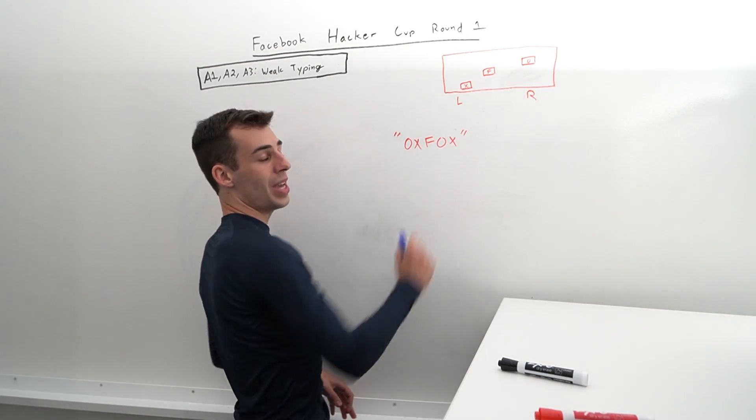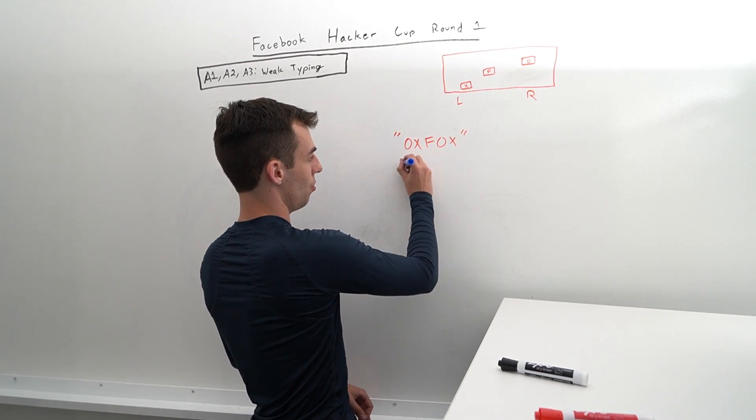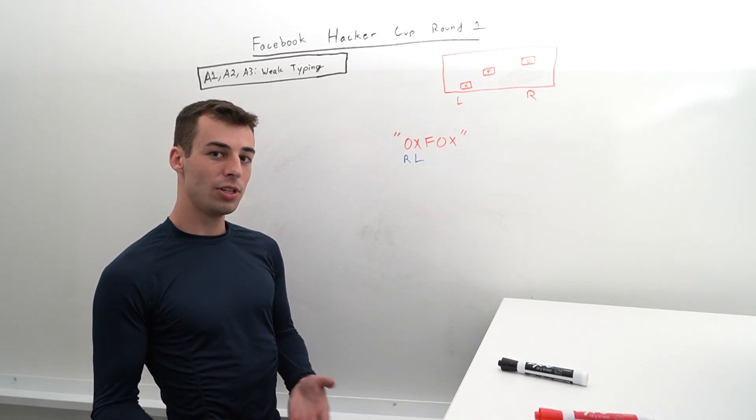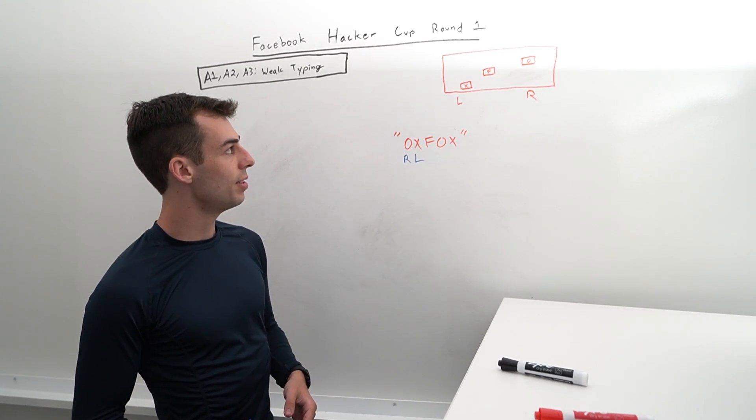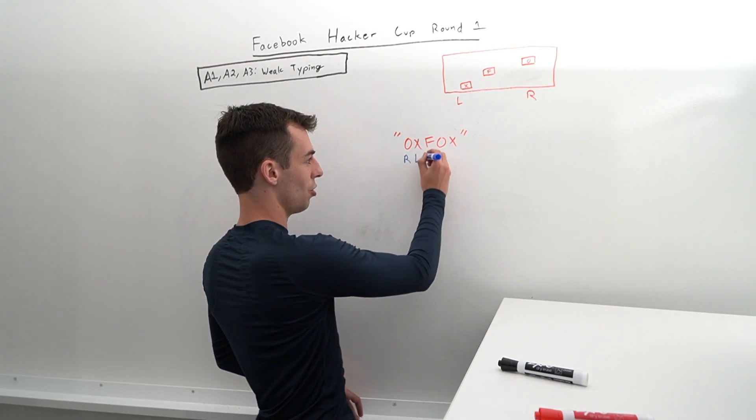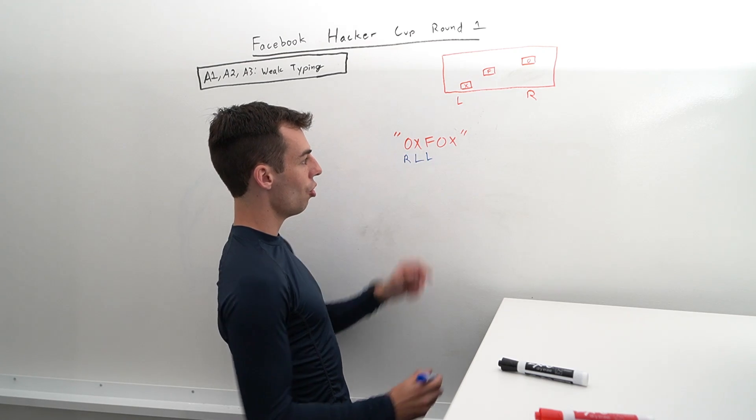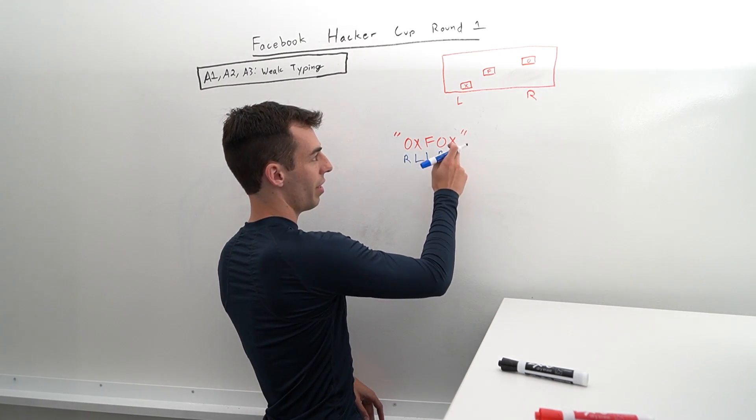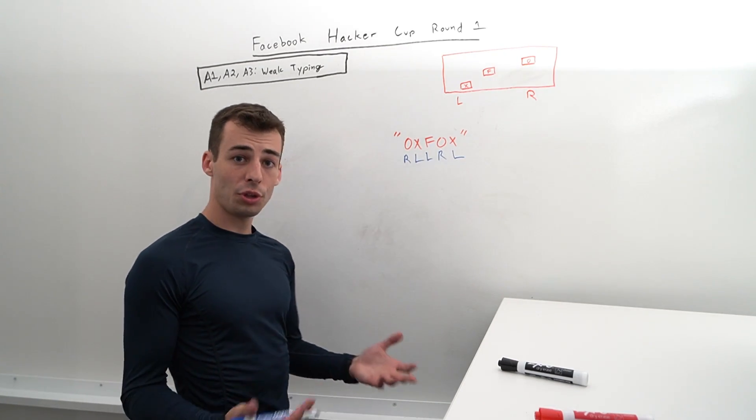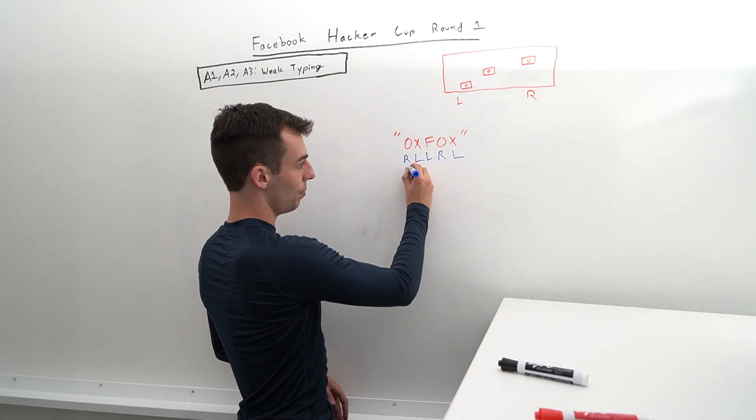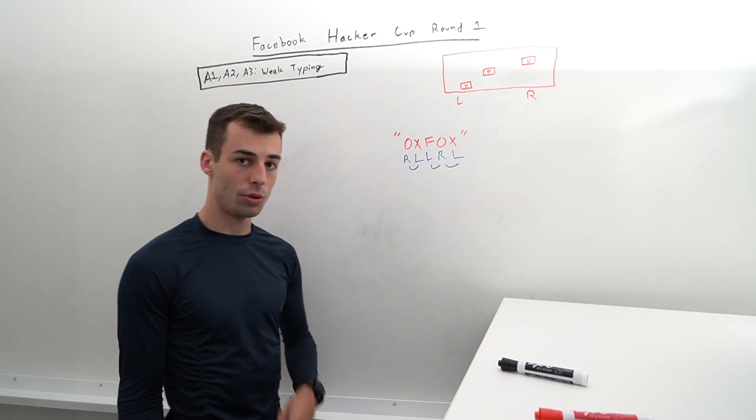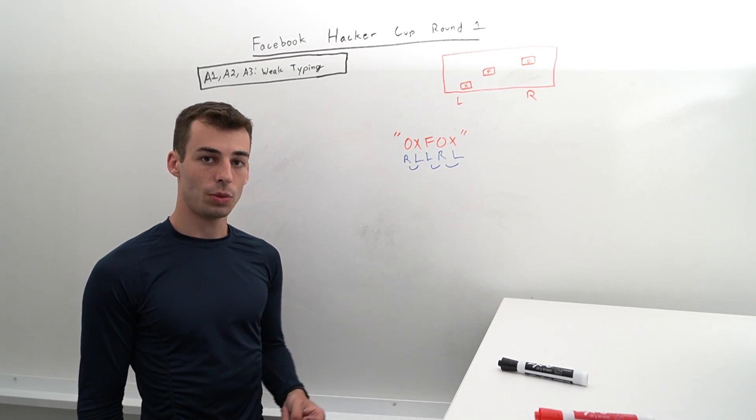For the O, we have to use our right hand. For this X, we have to use our left hand. For the F, we can do whichever we want, but since we previously used our left hand, let's not switch hands here. Now we have an O, which we have to use our right hand for, and then an X, which we have to use our left hand for. The total number of switches will be one switch here, one switch here, and one switch here. So we do three switches, which we want to minimize.